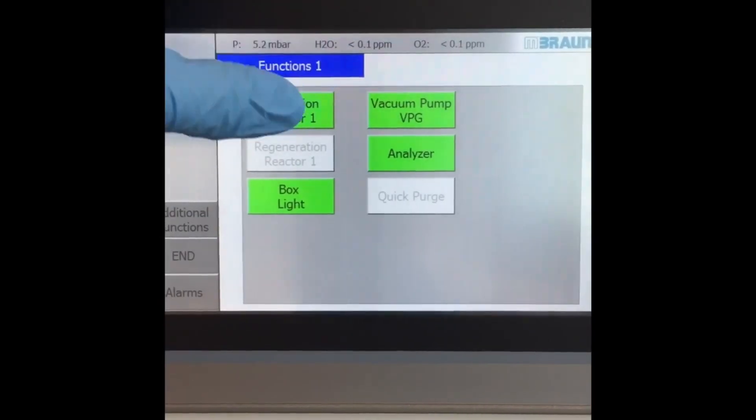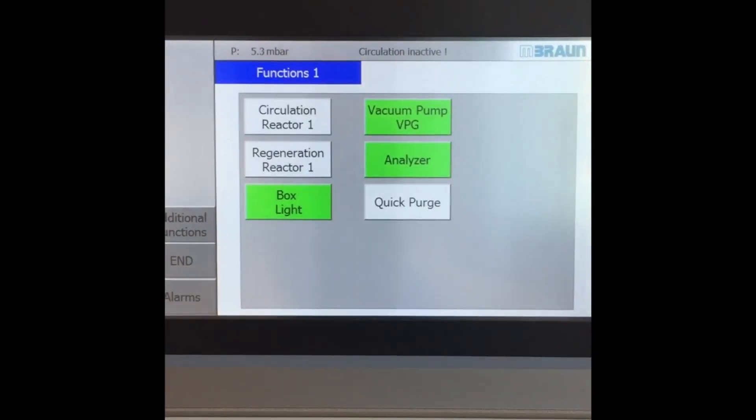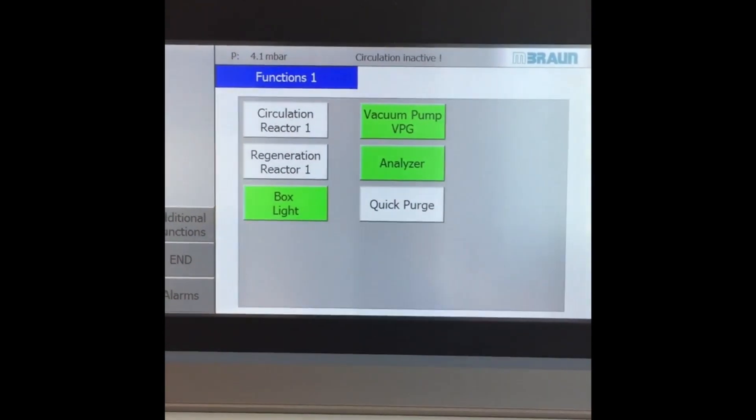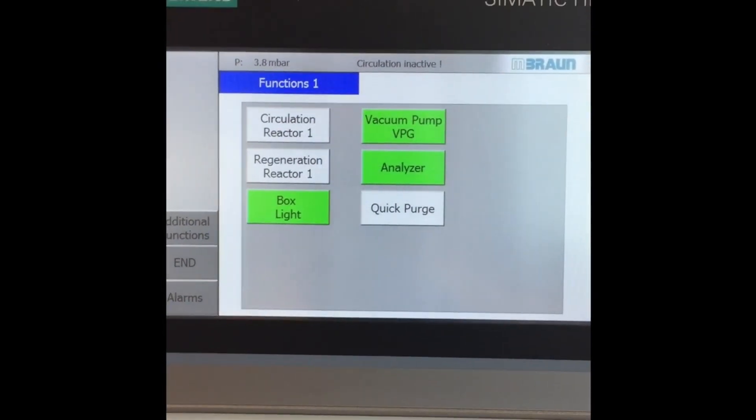If the glovebox passes inspection then the circulation purifier is turned off. The circulation purifier cycles the glovebox atmosphere through a copper catalyst to remove trace amounts of water and oxygen. The catalyst should not be exposed to solvent vapors evolved while spin coating.